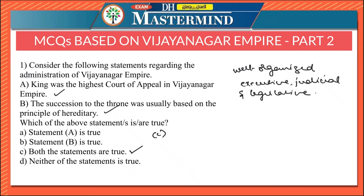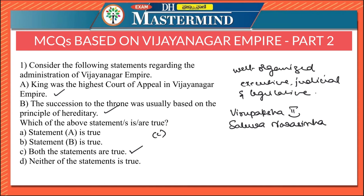Though succession was usually hereditary, please remember Virupaksha 2 — he was the last ruler of the Sangama dynasty. Virupaksha 2 was deposed and assassinated by his commander-in-chief Saluva Narasimha, who was the founder of the Saluva dynasty. The Saluva dynasty lasted only two decades, ending in 1503 AD.